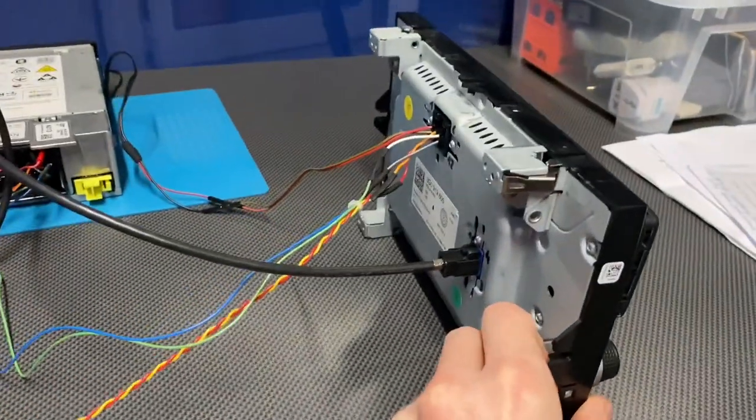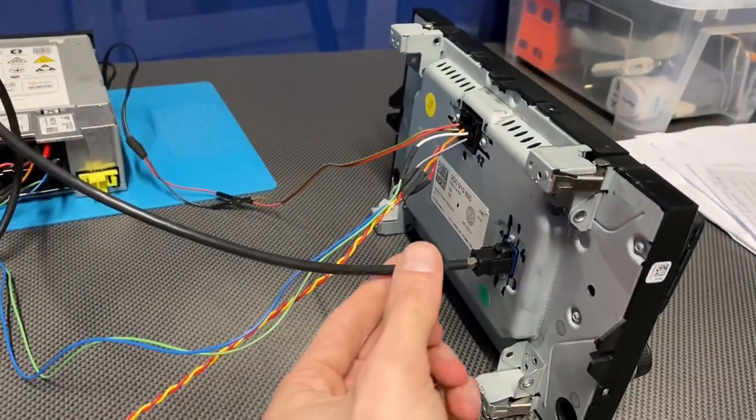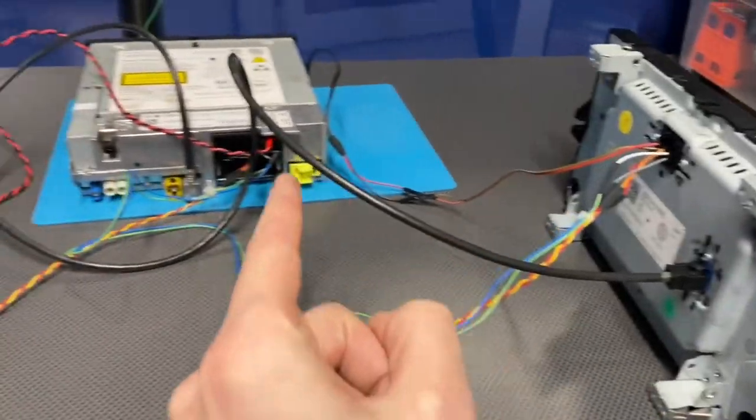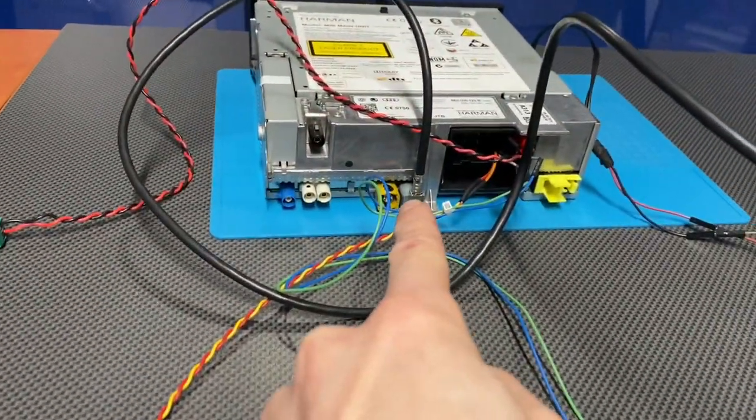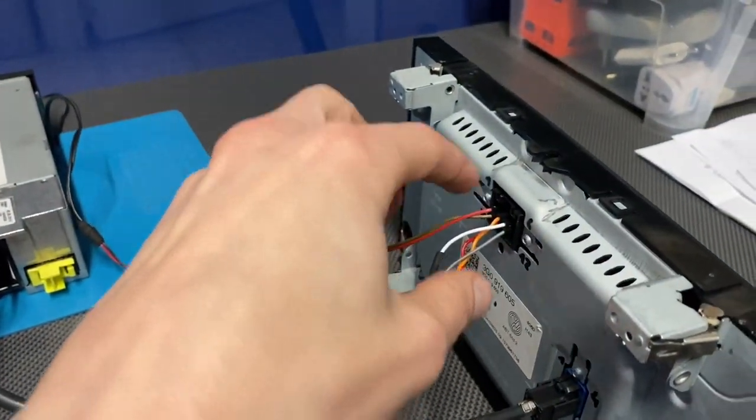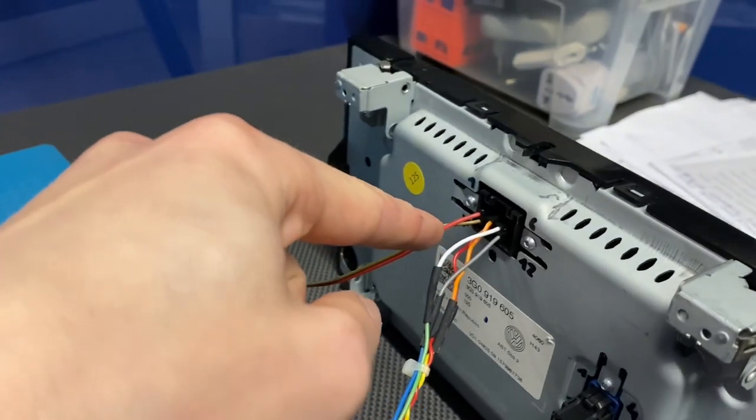So over here we need two things. This is an LVDS cable for the video signal feed which goes into the gray connector on the unit. And we need to add some cables over here to this 12-pin connector.